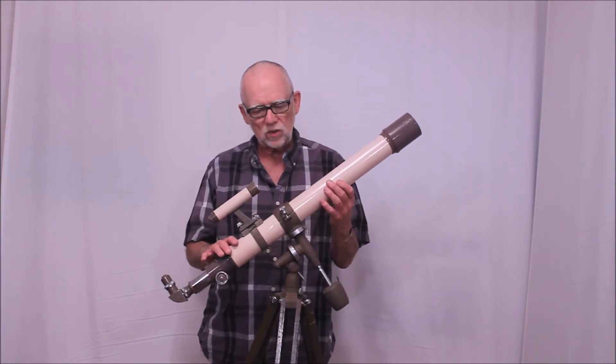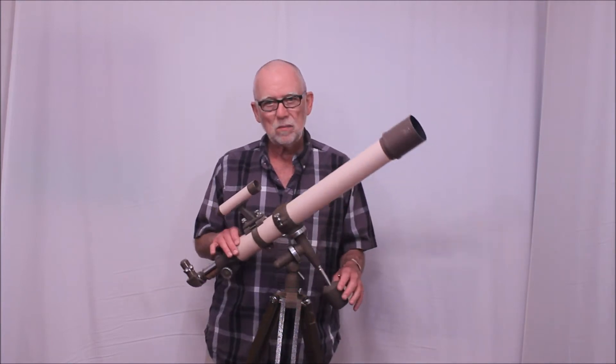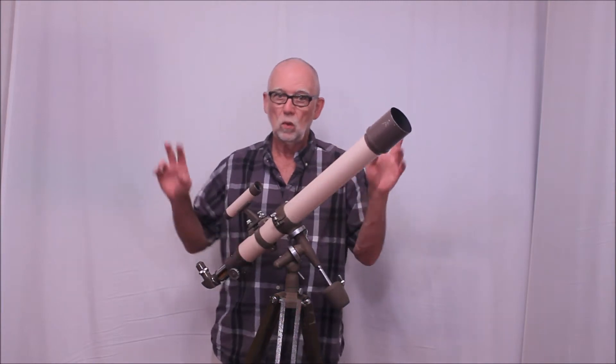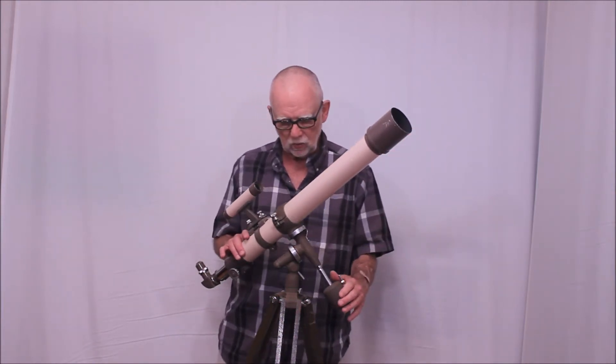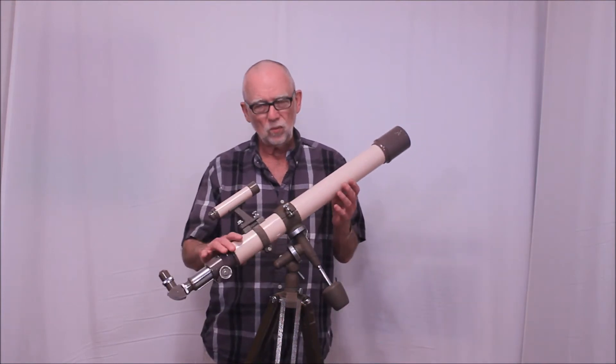One of the interesting things about this is that the mount for this scope is almost exactly the same as the 50 millimeter. And both mounts feature, or don't feature, slow motion controls, which sounds like a definite downside. But really is not.